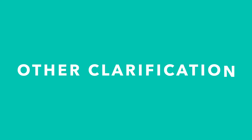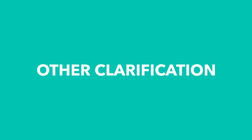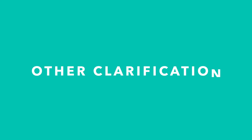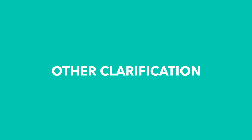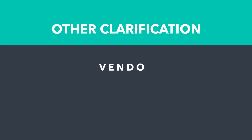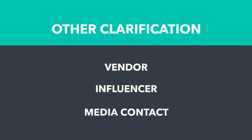If you use HubSpot, you also have a lifecycle stage called Other. We use this as a catch-all category and then further define it by a second custom field. We call that second field Other Clarification, and have options such as Vendor, Influencer, Media Contact, and more.